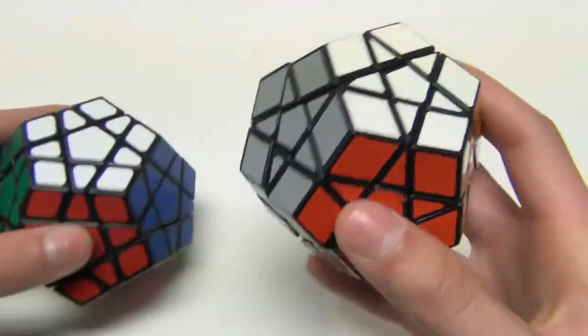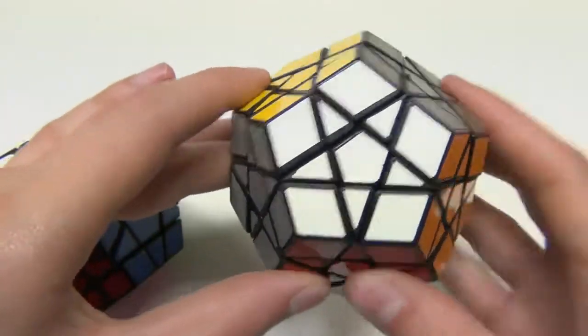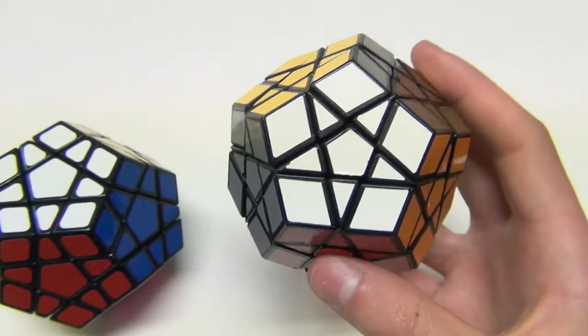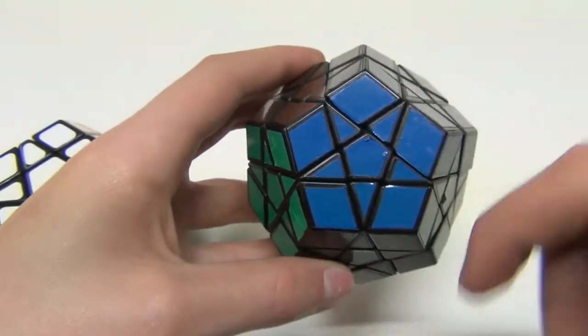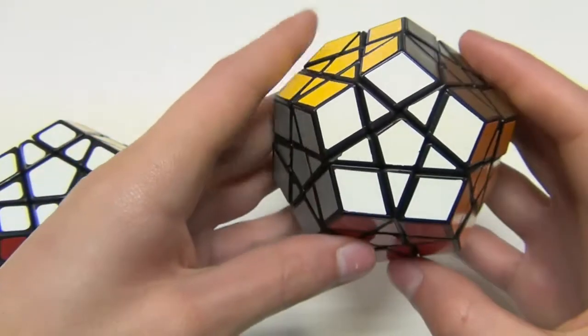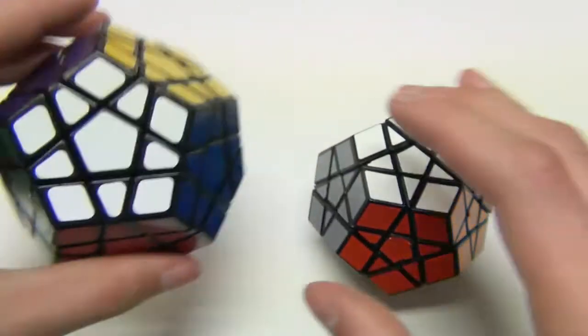The second difference is the color scheme. And as you can see, the color scheme on this puzzle is quite unusual. But what I realized is that this puzzle, the way the color scheme works is it's cool colors opposite warm colors. And I thought that was pretty interesting to see.